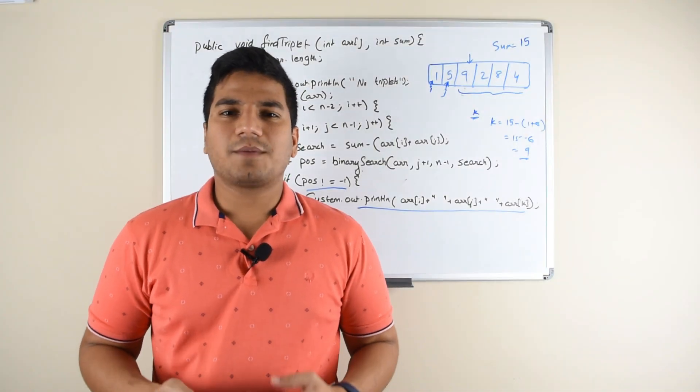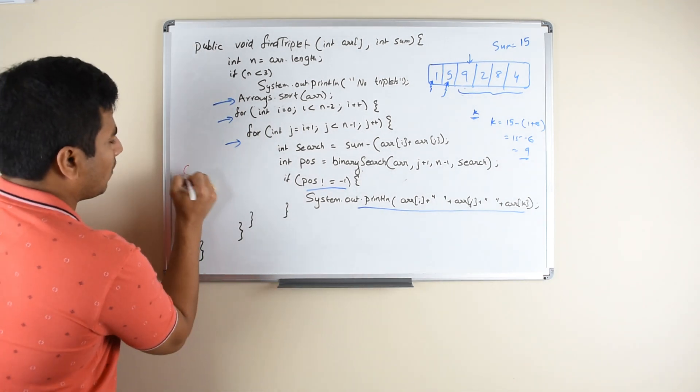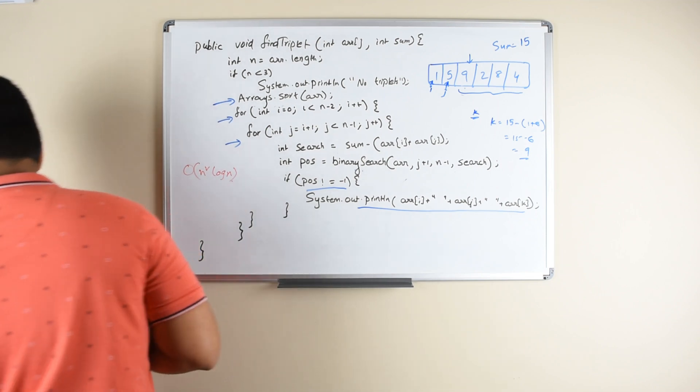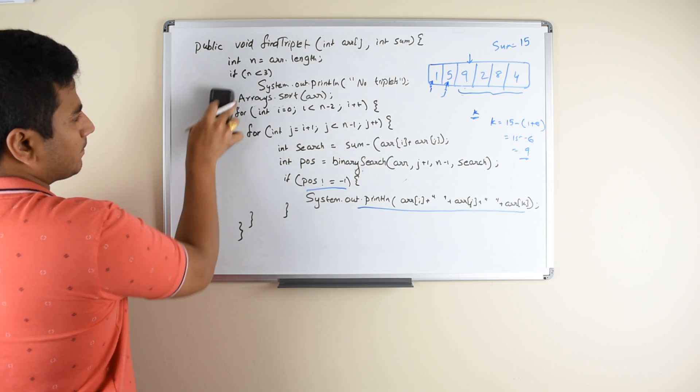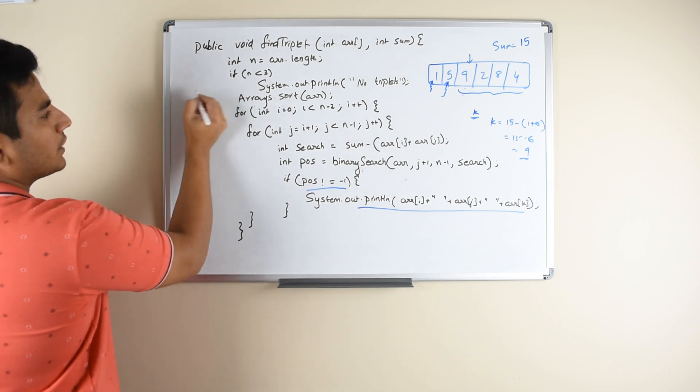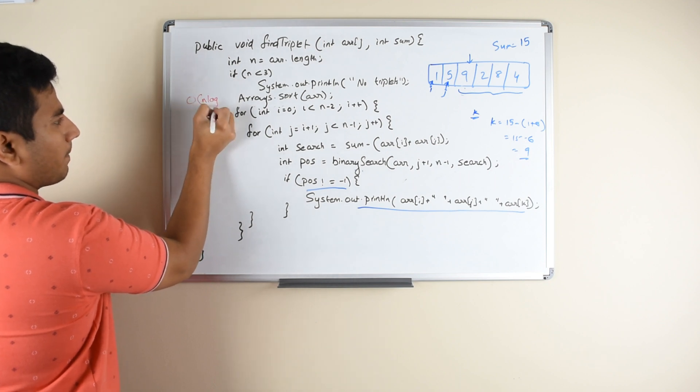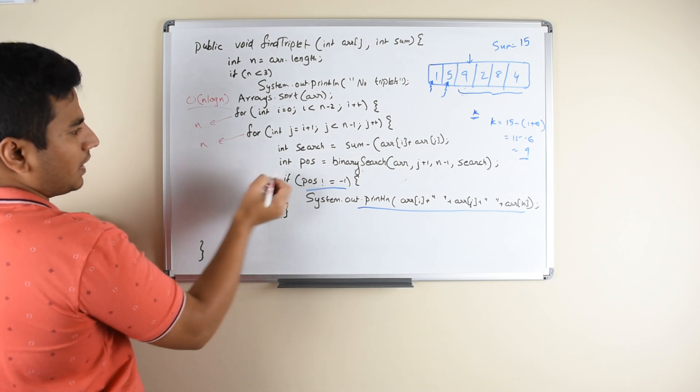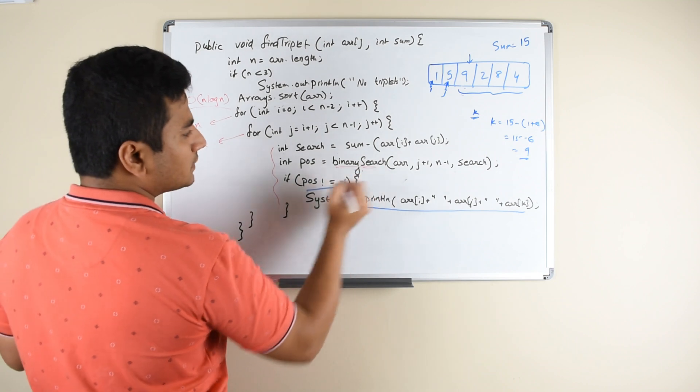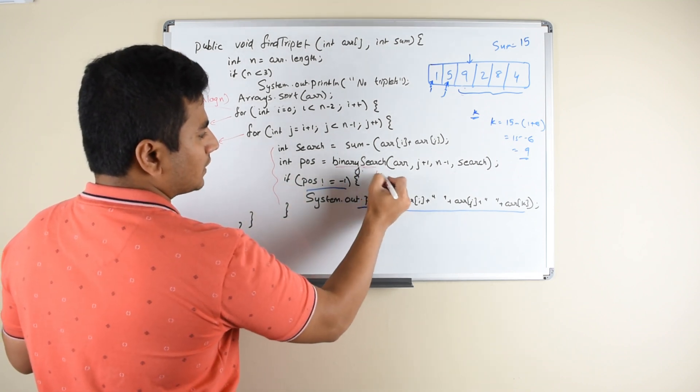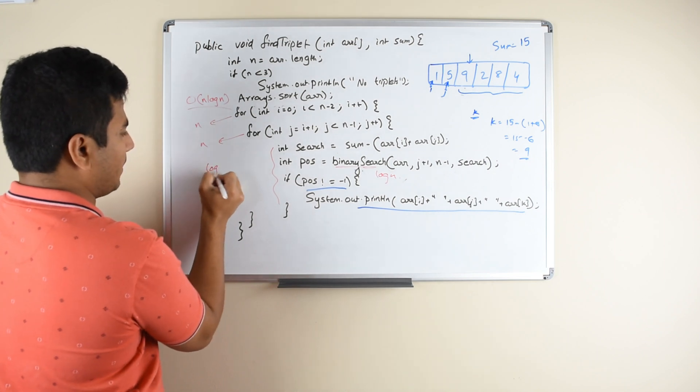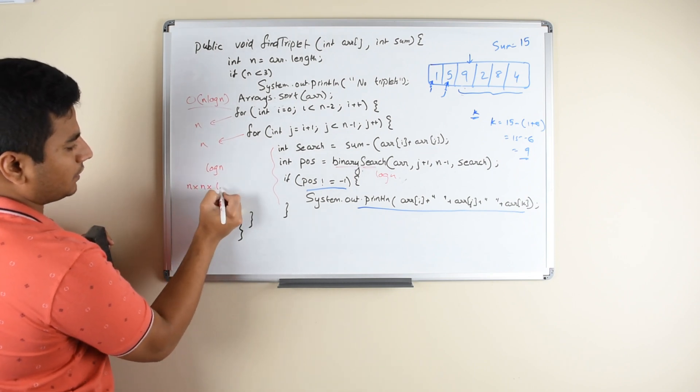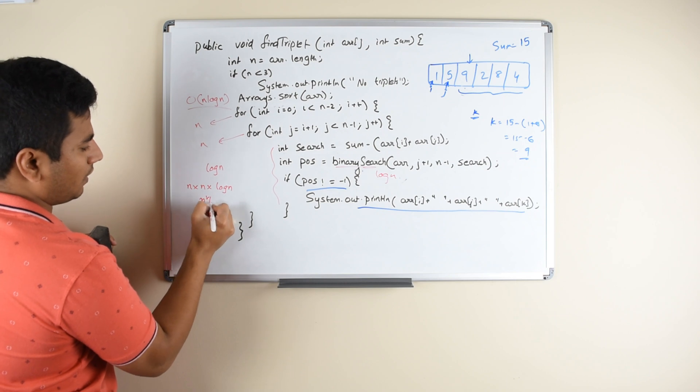The time complexity of this approach would be O of n square log n. Let us see why it is O of n square log n. So we know that by sorting the array you are consuming O of n log n. After that you have two loops, so n from here and from here, and then for the rest of the logic here the binary search takes up the time complexity of logarithmic n, so it is log n. When you combine all of these three, the time complexity will be n into n into log n, which is n square log n.